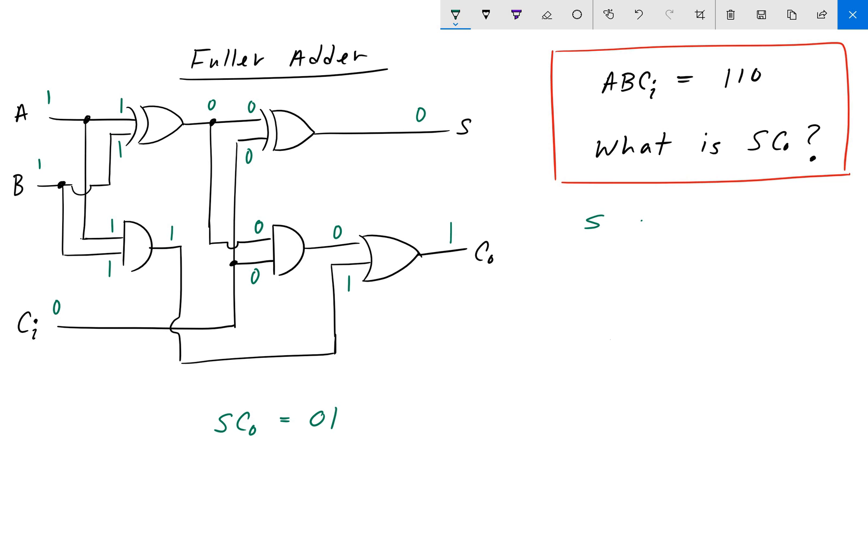And here we have that A is 1, and B is 1. So, 1 plus 1 in binary is 10.